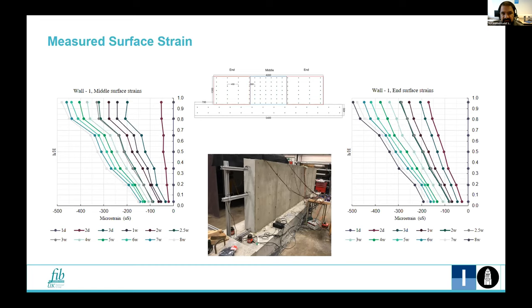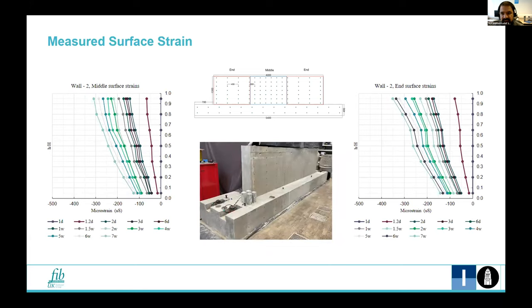This is the representation of strains for first test. Left one is for the middle part of the wall and the right one is for the ends. This is the similar behavior which was observed in the case of second test. Increase in strain with time and along the height of the walls. Lesser strain occurs in the middle parts compared to the ends.